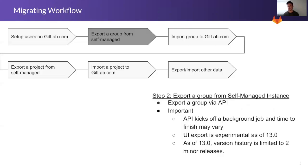In step two, export the group from your self-managed instance. This can be done through an API or the UI export, which is experimental as of 13.0. Note that depending on the complexity of the export, this is a background job so timing may vary. Also as of 13.0, the version history is limited to two minor releases — so if exporting from self-managed and importing into GitLab.com, the version must be 13.0, 12.10, or 12.9, and this will shift as each version increases.